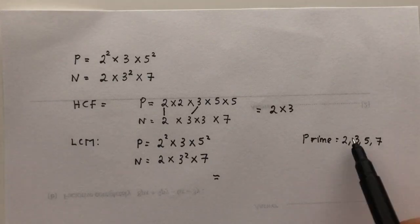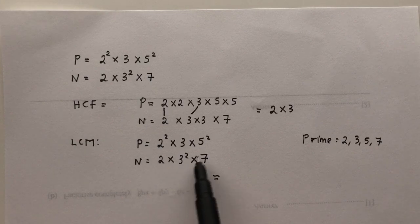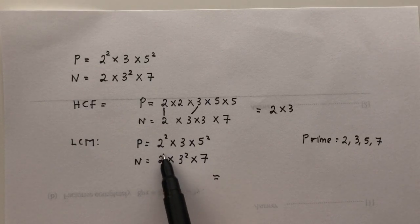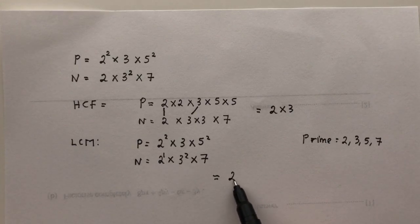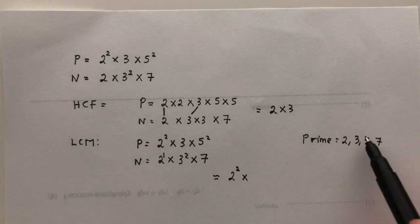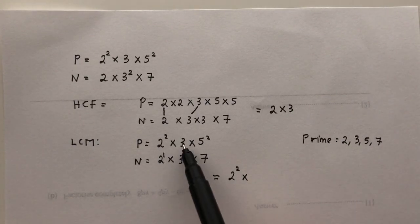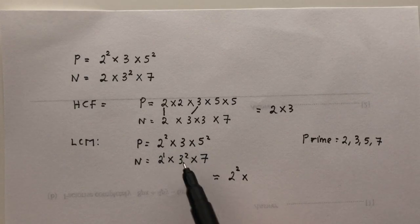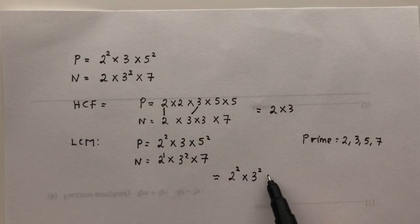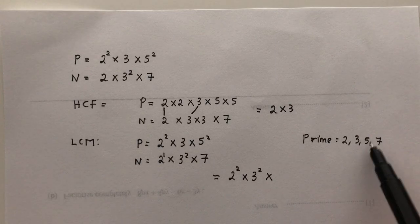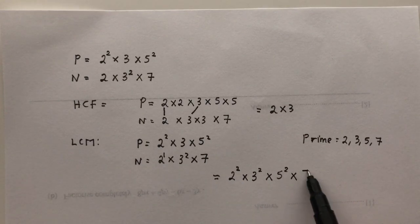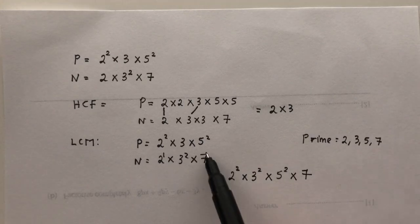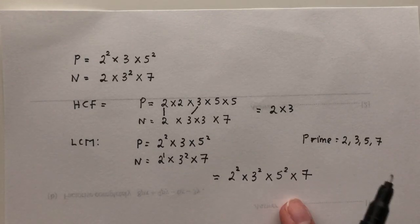So for each of those numbers we have to see where does it happen the most. So first one for number 2, we see here we have 2 only power 1 here, we have 2 power 2, so we take the most with 2 power 2 times. Here we have 3, here we have 3 power 1, 3 power 2, so we take the most 3 power 2 times 5 power 2, and finally that will be times 7 because it is only here. So that's how you find the LCM.